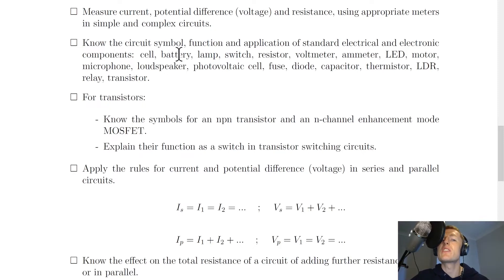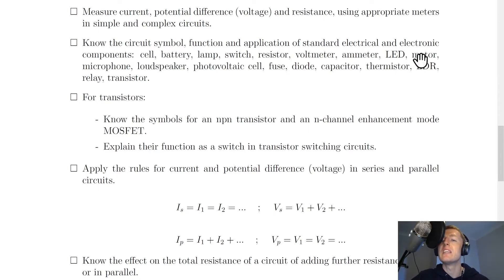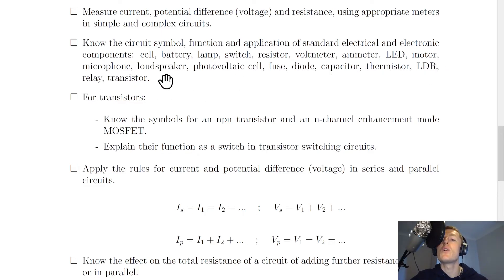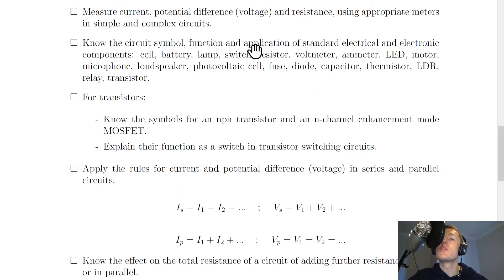You need to know the circuit symbol, function, and application of standard electrical and electronic components, including: cell, battery, lamp, switch, resistor, voltmeter, ammeter, LED, motor, microphone, loudspeaker, photovoltaic cell, fuse, diode, capacitor, thermistor, LDR, relay, and transistor. Go back and look at the circuit components table from the video on circuit components, which showed you the circuit symbol, function, and applications of where you would actually use them.